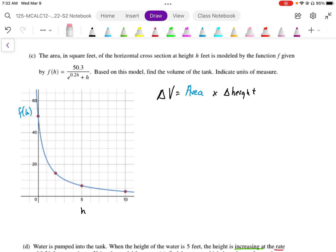So the change in volume is going to be the area times the change in height. If I were to show this on this graph, the area is going to be given by the height of the graph. And then if we take some small sliver of delta h, then we have a small change in volume.